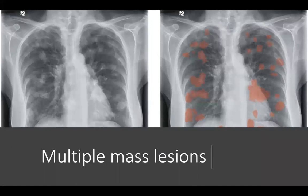The previous slide showed an example of multiple mass lesions. Differential diagnoses include metastasis, seen as usually well-defined nodules of varying sizes; cavitation usually seen in squamous cell carcinomas, sarcomas, and metastasis from colonic primaries; abscess, usually seen as cavitations with thick irregular walls. Rare causes include rheumatoid nodules, Wegener's granulomatosis, and multiple arteriovenous malformations. The two images show a patient with multiple lung metastasis throughout both lung fields, with the metastases marked in red on the right image.